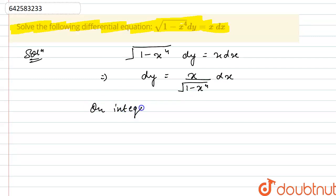So on integrating both the sides, what we will get is integral of dy is equals to integral of x divided by root over of 1 minus x raised to the power 4 dx.